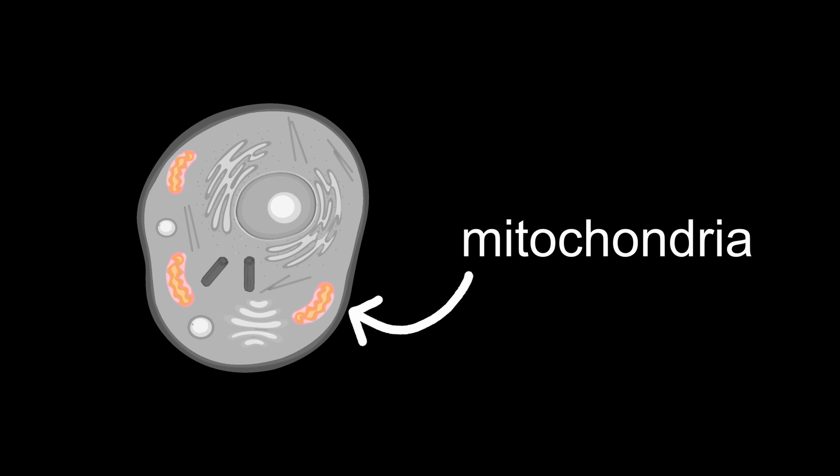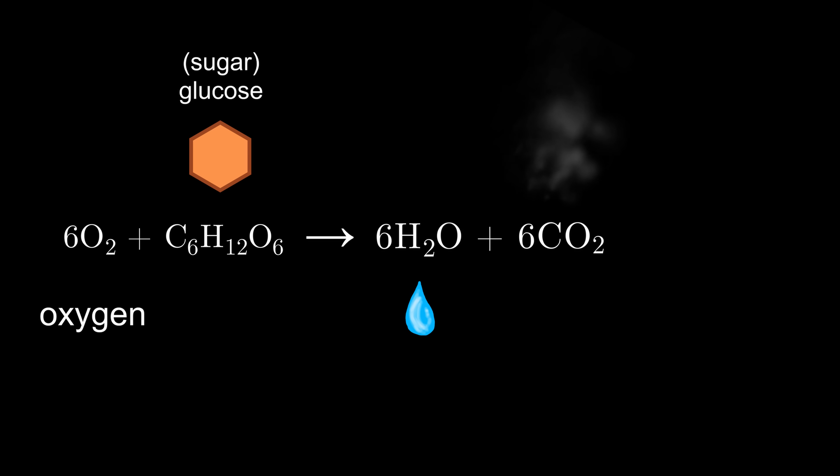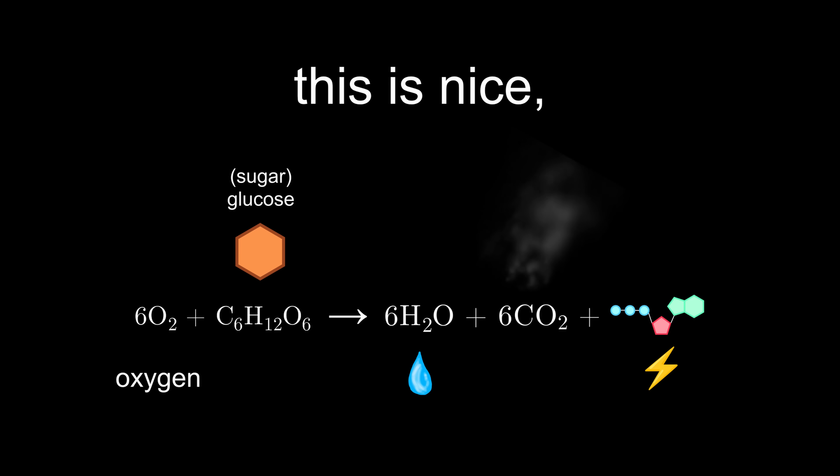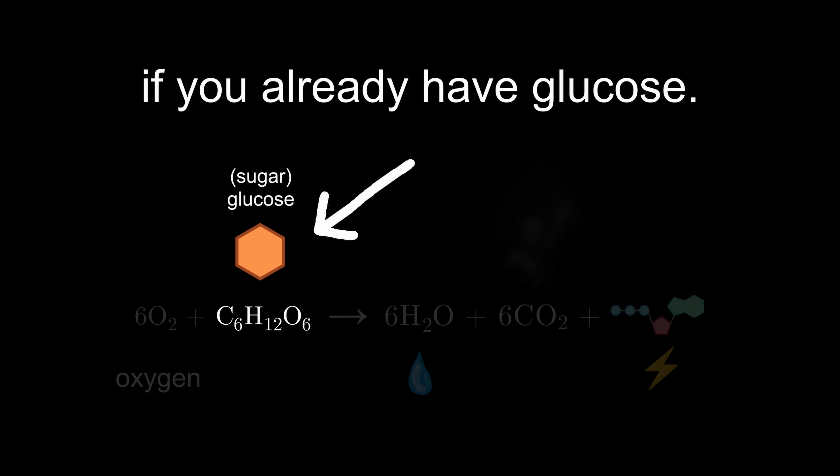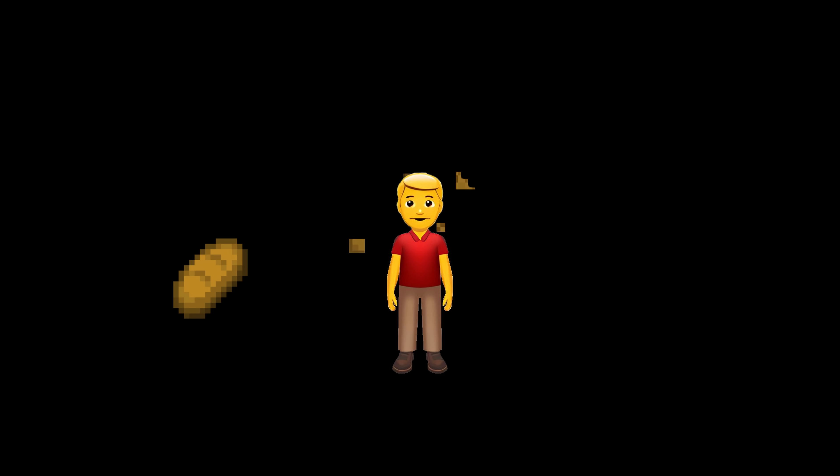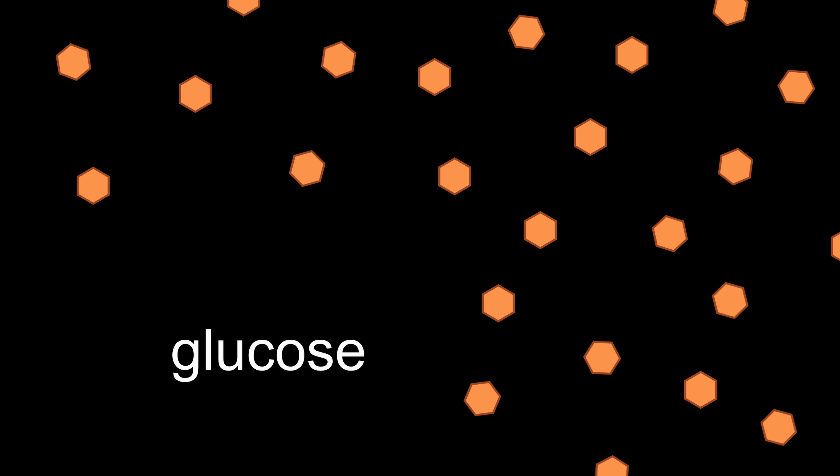For example, through cellular respiration, which happens in the mitochondria. Together with oxygen, glucose, so sugar, is turned into water, carbon dioxide, and ATP. This is nice, but it only works if you already have glucose. Humans are heterotrophs, they eat food, inside of which is sugar, which is then broken down into glucose.